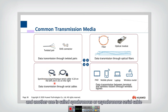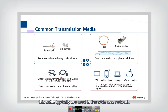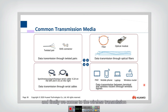Another one is called synchronous or asynchronous serial cable. This cable is typically used in the wide area network. V24 and V35 are two widely used serial cable standards.